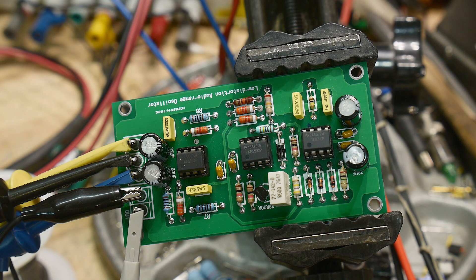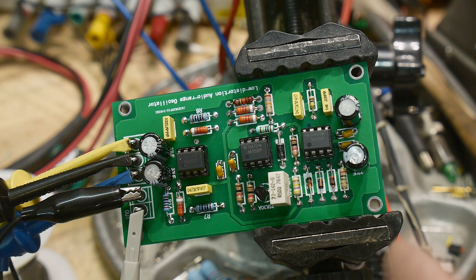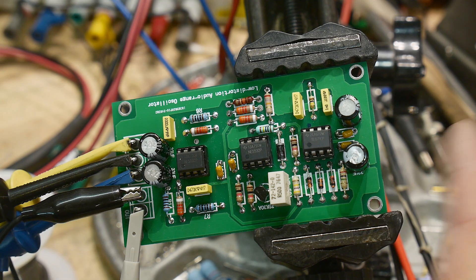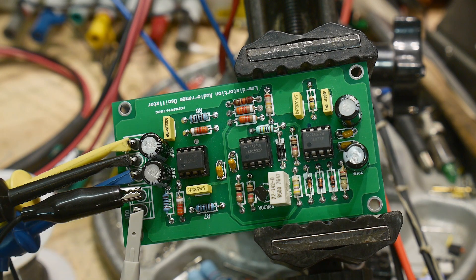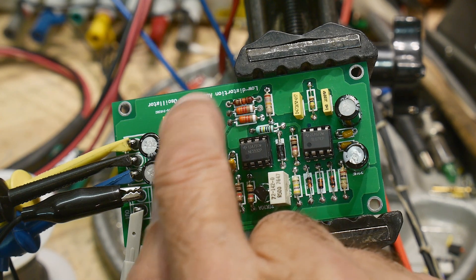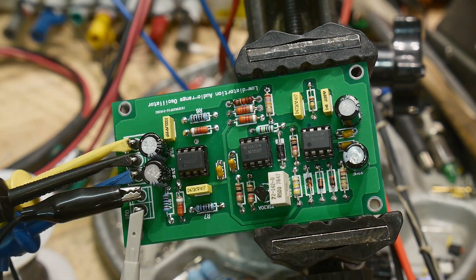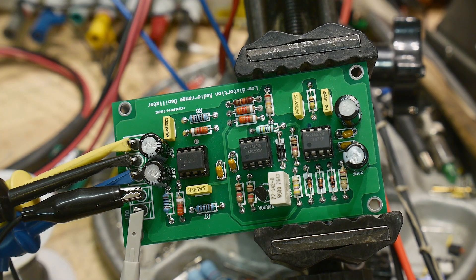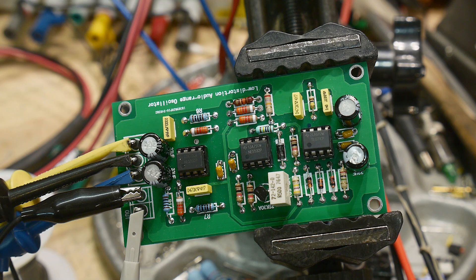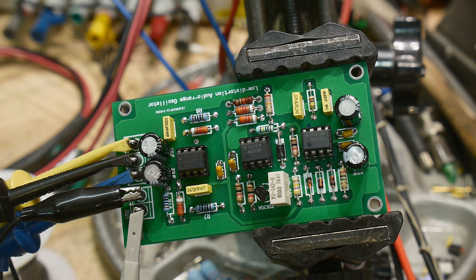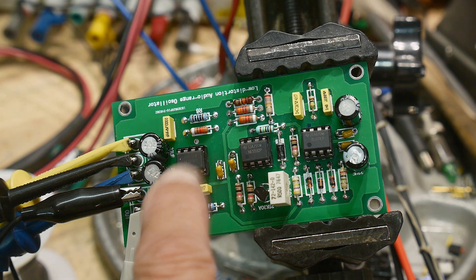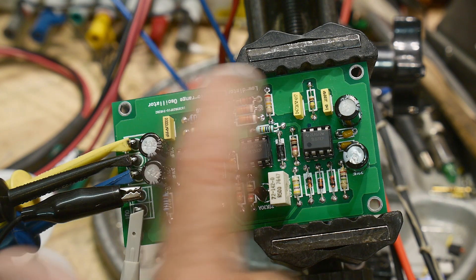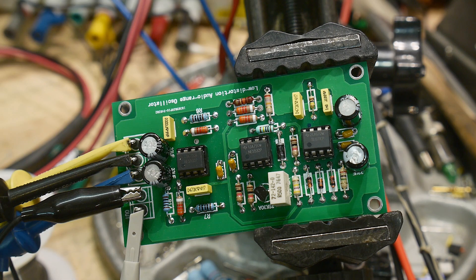I was on eBay the other day and I found these boards. It says Low Distortion Audio Range Oscillator. They sold it as a kit and they sold the PC board by itself, so I bought the PC board and put my own parts in it. I didn't trust getting op amps from China or nice capacitors, so I put my own stuff in there.